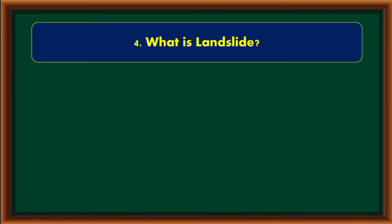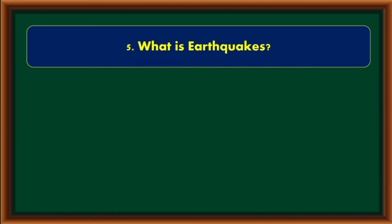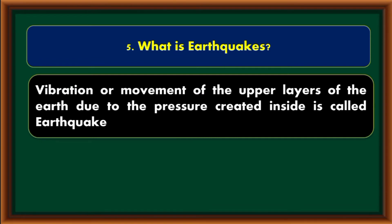What is a landslide? Landmass sliding down the slopes from mountains or hills is called a landslide. What are earthquakes? Vibrations or movement of the upper layers of the earth due to the pressure created inside are called earthquakes.